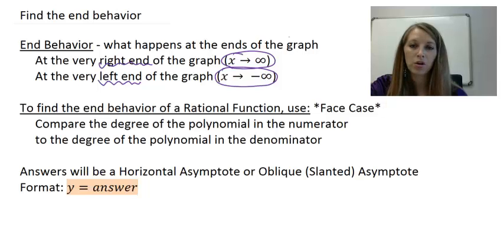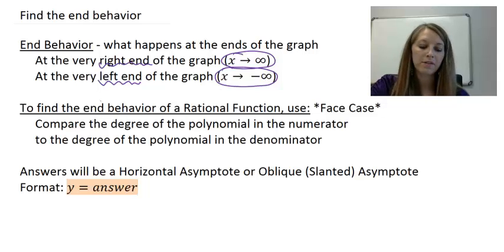x approaching infinity, meaning x getting larger and larger and larger at the right hand of the graph, and x approaching negative infinity, meaning x getting smaller and smaller and smaller, meaning the left end of the graph.